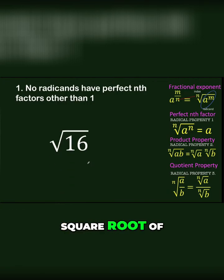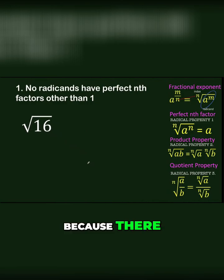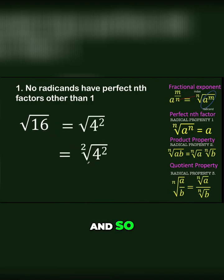if you have the square root of 16, this is not yet in its simplest form because there are still perfect n-factors. Notice that 16 can be written as 4 squared.